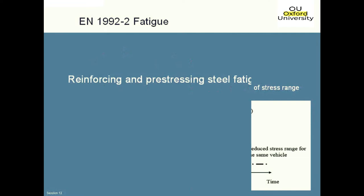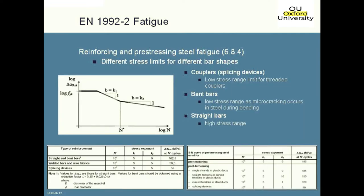Section 6.8.4 of the code takes you into the material characteristics of different steelwork elements and gives you an SN curve. The SN curve, as you can see here, is characterised by two different gradients — one with an index of K1 and one with an index of K2 — and they meet at a position N*, where for different details N* is either 10^6 cycles or 10^7 cycles.